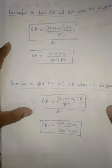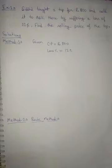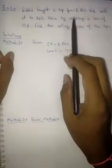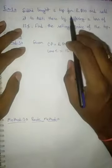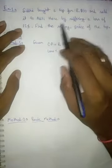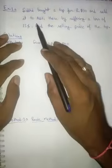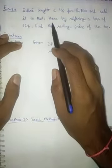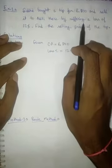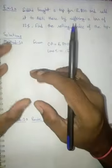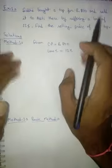Let's do some questions, then your concept will be clear. Here is your classmate Siddhi — Siddhi bought a top from V-Mart for Rs. 800, and sold it to Arithi, thereby suffering a loss of 12%. Find the selling price of the top.